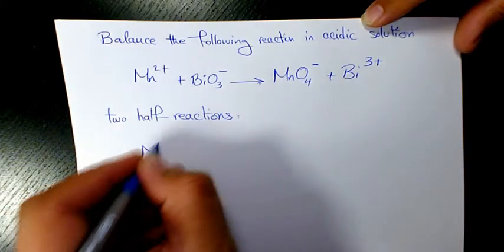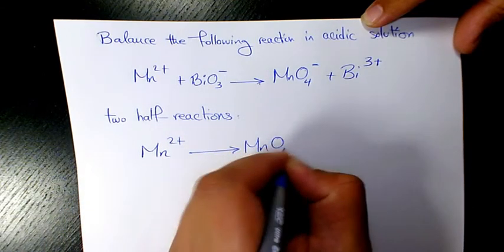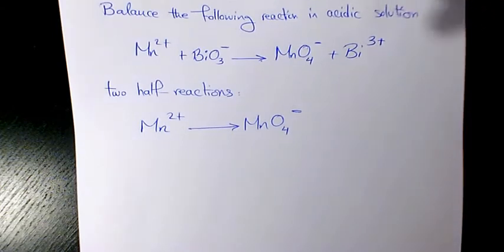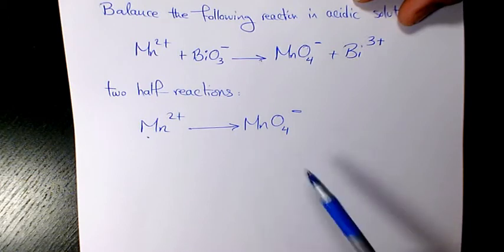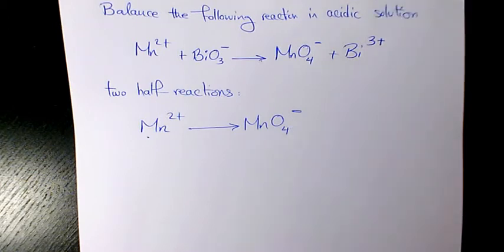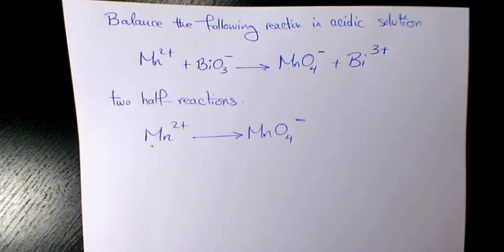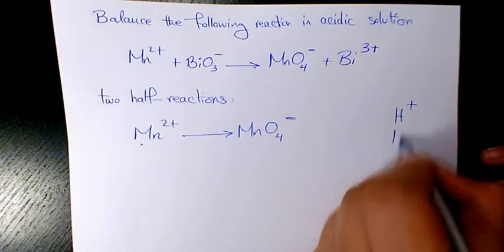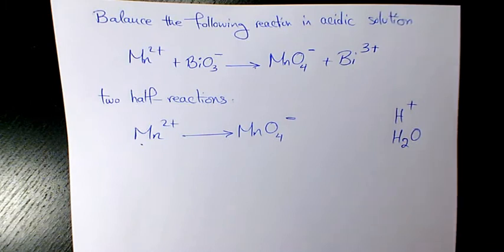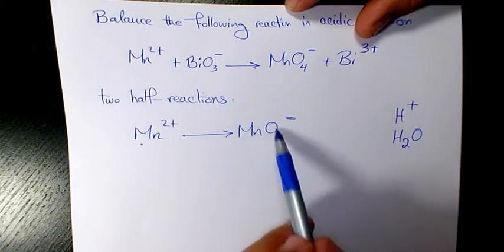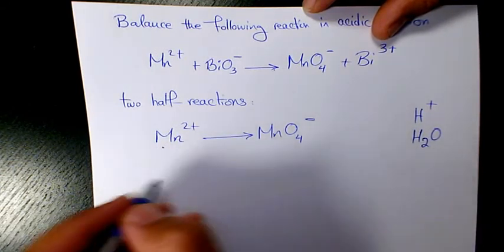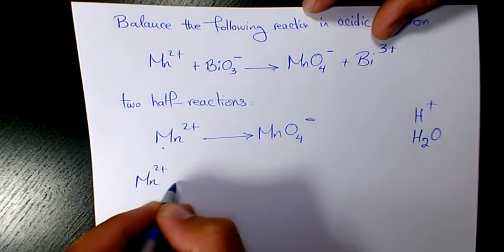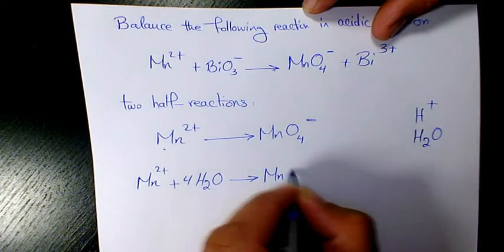I write the first one: Mn gives MnO₄⁻. We need to balance the atoms first and then balance the charges. Here we have one Mn on each side, but we have four oxygens on the right hand side and there is no oxygen on the left hand side. Whenever we are dealing with acidic solution, we are able to add protons or H₂O to balance the atoms. Since we have four oxygen atoms on the right side, we need to add four molecules of H₂O on the reactant side: Mn²⁺ plus 4H₂O gives MnO₄⁻.